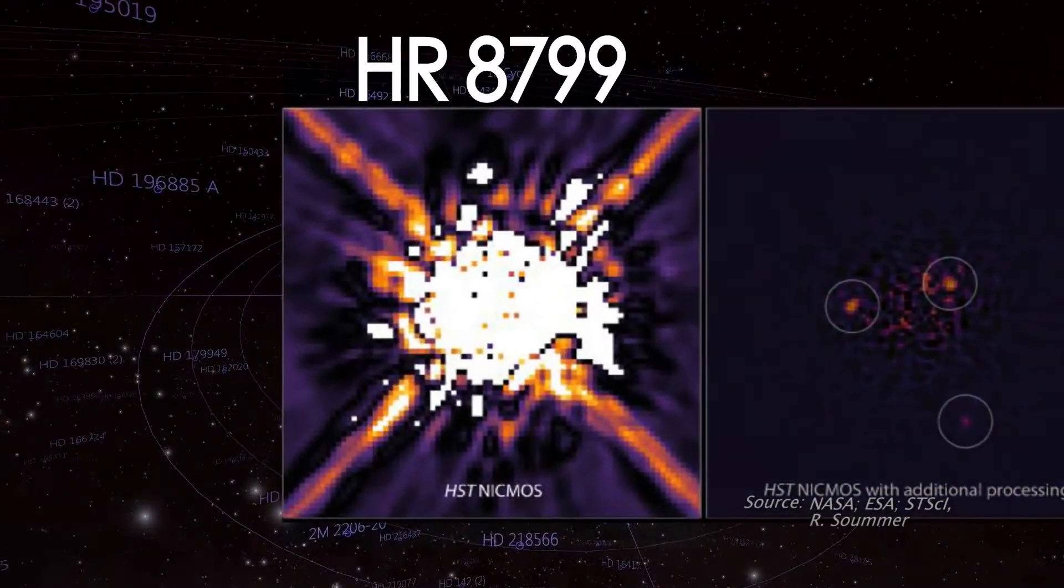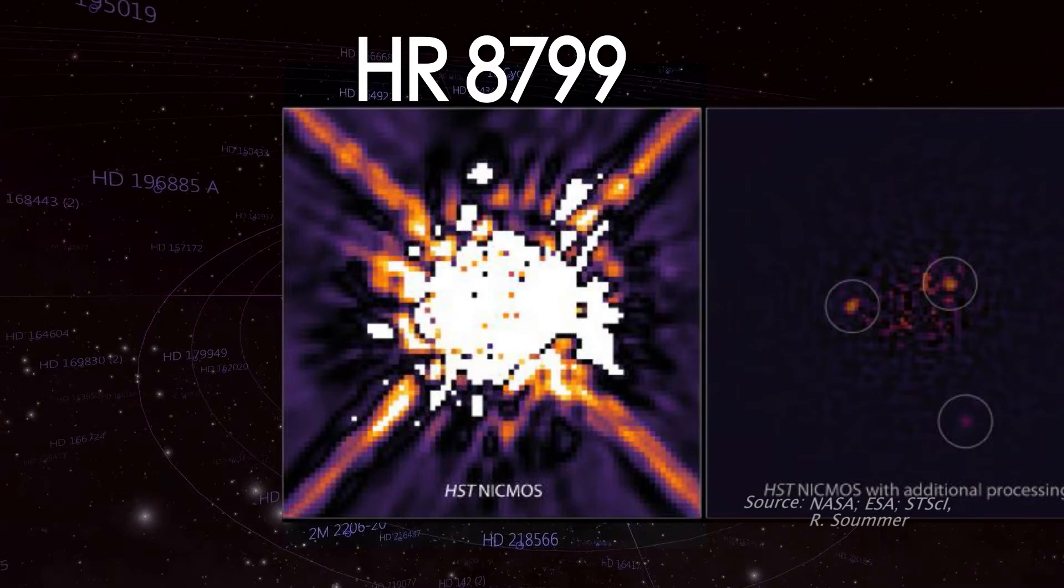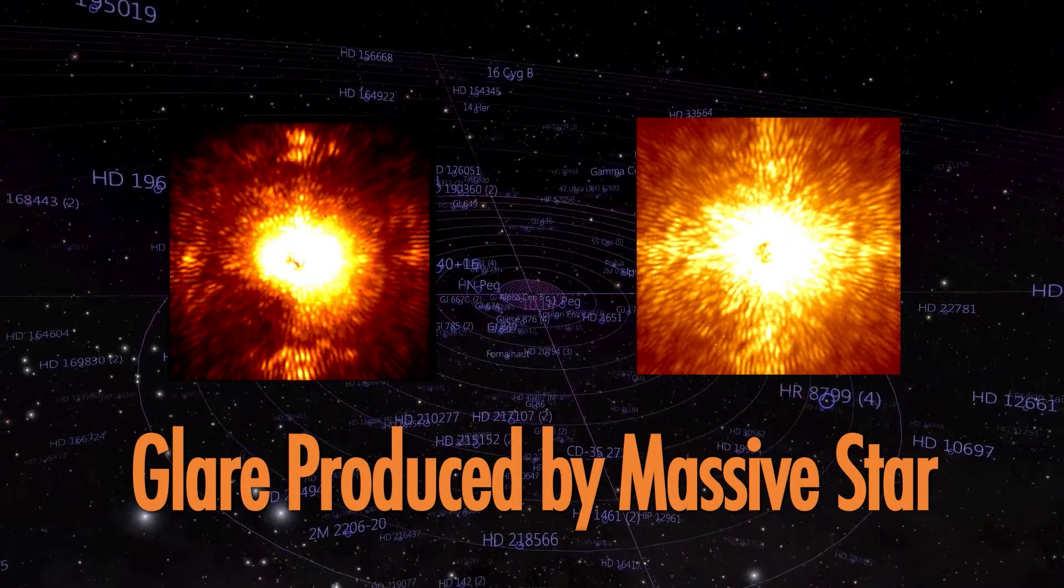It's nothing like our solar system in the sense that the star is more massive, several times the mass of our sun, and the planets are larger. The star is called HR 8799. Until now, the glare from this massive star made it impossible to see the planets.